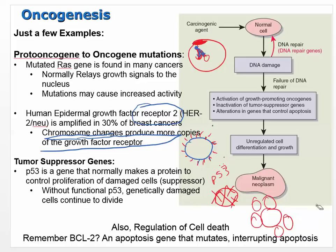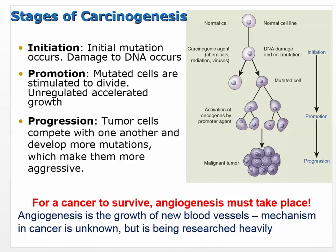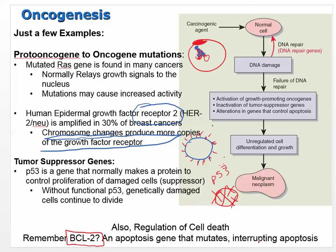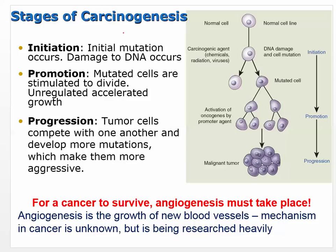BCL2 — B-cell lymphoma 2 — is part of the apoptosis chain; when it's interrupted, it can cause a certain type of B-cell lymphoma. The stages of carcinogenesis are: initiation, where initial DNA damage must occur; promotion, where the mutated cell is stimulated to divide with unregulated and accelerated growth; and progression, where tumor cells compete and develop more mutations, becoming more and more aggressive, resulting in a malignant tumor.